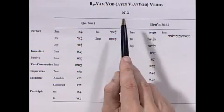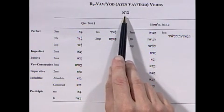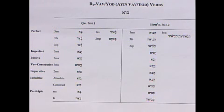Now let's discuss the special R2 Vav verb bo — that's the name of the word. It's doubly weak: weak in its middle with the holem-vav, and also weak with the aleph at the end. But the primary weakness is the R2 Vav. This verb is extremely common in Hebrew, which is why we need to pay special attention to it.